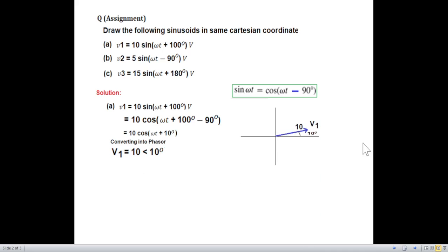This is our Cartesian axis coordinate x and y. And we plotted the signal V1 with a magnitude of 10 and an angle of 10 degrees, positive 10. So this way we go positive and this way we go negative, positive 10. So this is the first signal.